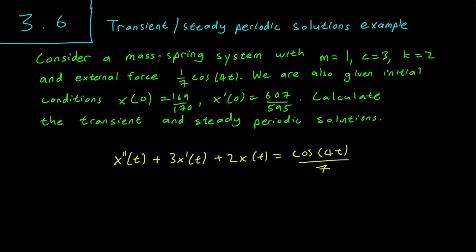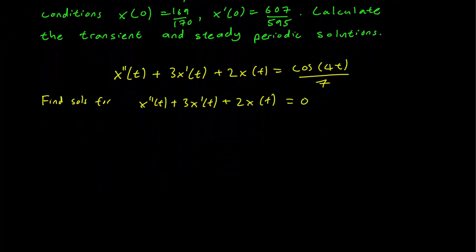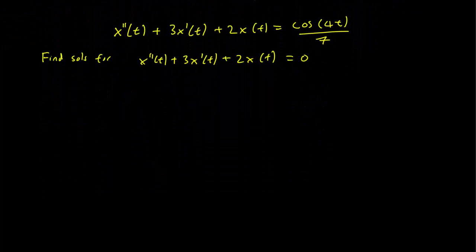This is our equation. Our first step is to figure out the homogeneous solutions. In other words, we look first at the equation with the right hand side 0, and we know how to do this. So making our usual substitution, x equals e^(rt).